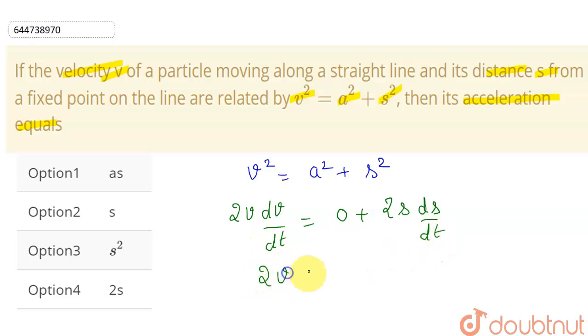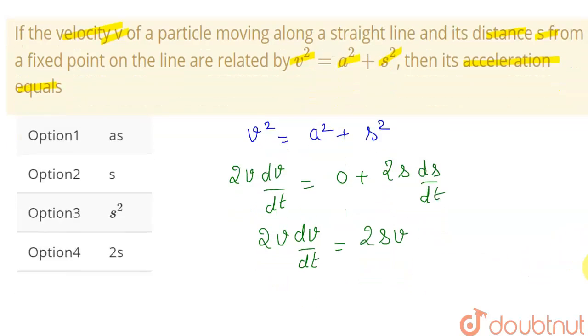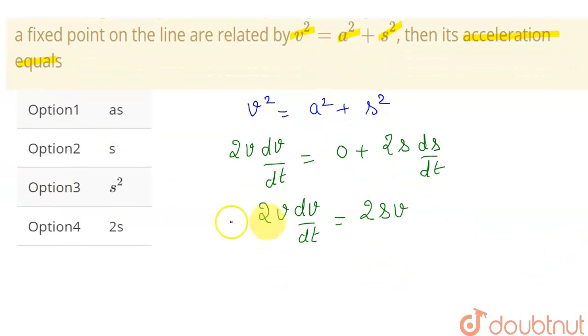Now from here I'm getting 2v dv/dt = 2s. This ds/dt is the velocity, so I can write v here.